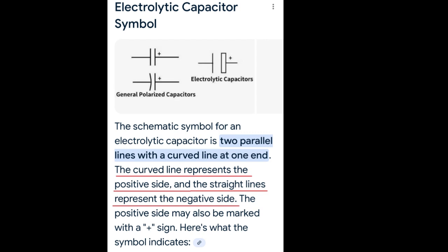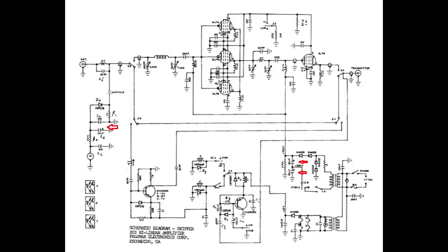Wait a minute. The straight line is positive in the drawing, and the curved line is negative. Hmm. I guess even the internet can make mistakes. I know. I'll break out a schematic and look at that. At least that'll give me some answers.